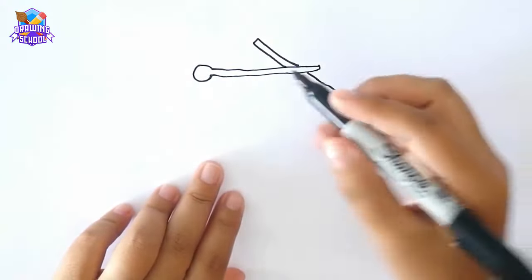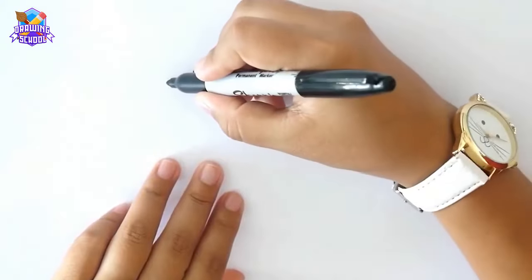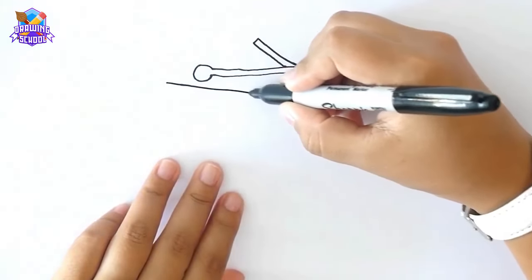Now I'm going to draw the xylophone, drawing two inclined lines like this.